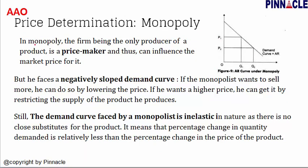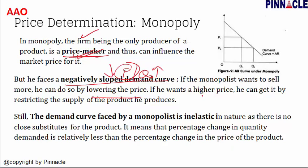Price determination in a monopoly market: in monopoly, a firm being the only producer of a product is a price maker and can influence the market price because it controls market supply. However, it has to face a negatively sloped demand curve, meaning of price and quantity only one can be decided by the firm. If the monopolist wants to sell more, it must lower the price. If it wants a higher price, the quantity demanded will fall, so it must restrict the supply of the product.